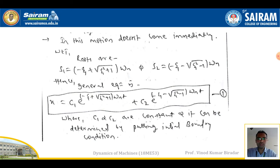Substituting s1 and s2 into the general solution gives equation 1: x = C1·e^[(−ζ + √(ζ²−1))ωn·t] + C2·e^[(−ζ − √(ζ²−1))ωn·t], where C1 and C2 are constants to be determined by applying boundary conditions.